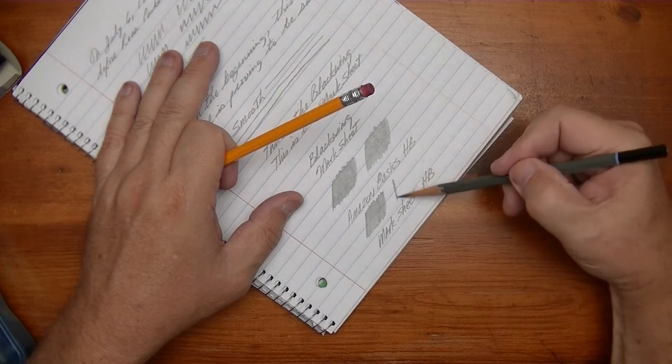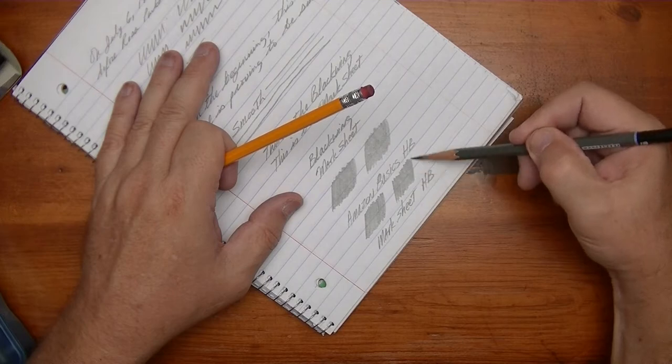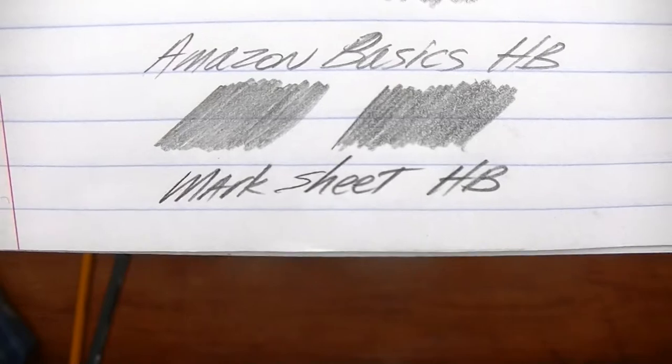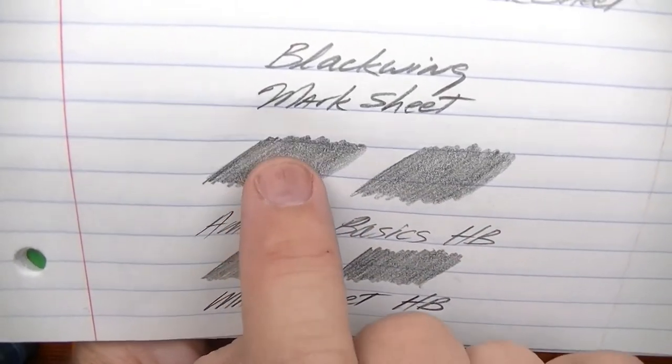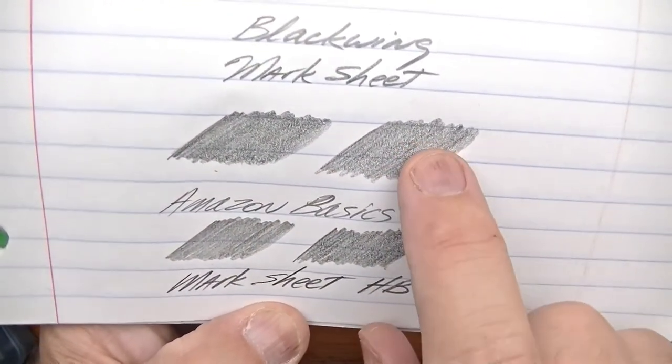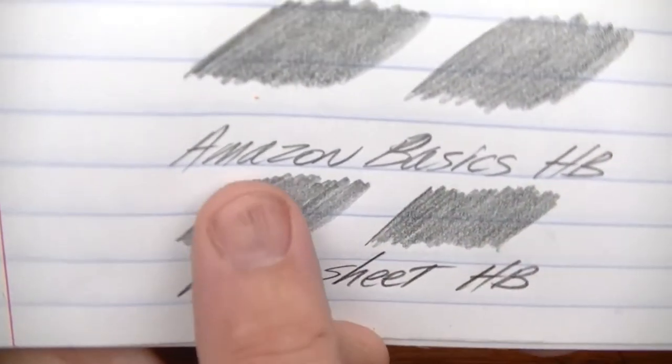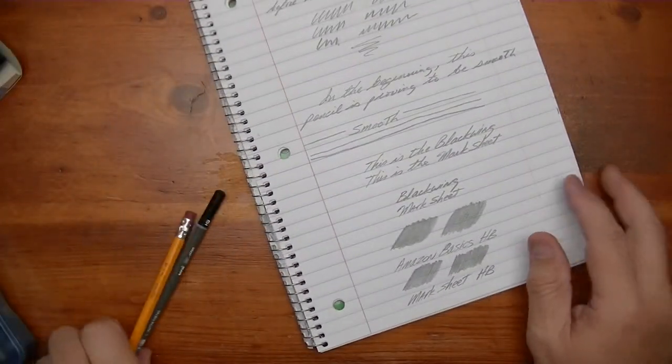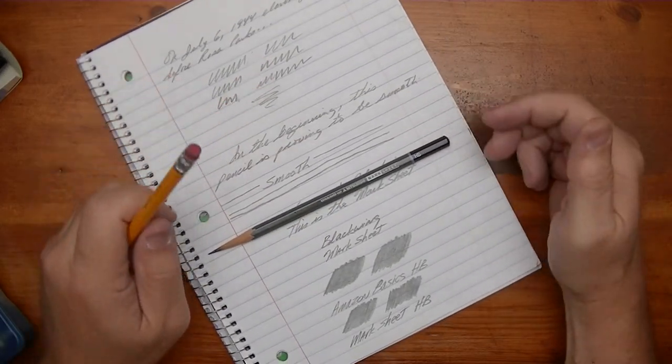All right. So you can see that even though Balance Blackwing is darker than Marksheet HB, the Marksheet HB is darker than the Amazon basics HB. And it is definitely smoother. Without a doubt, the Marksheet is an above average HB pencil because it was just compared with an average HB pencil which is in my collection kit because it is still a decent HB pencil.